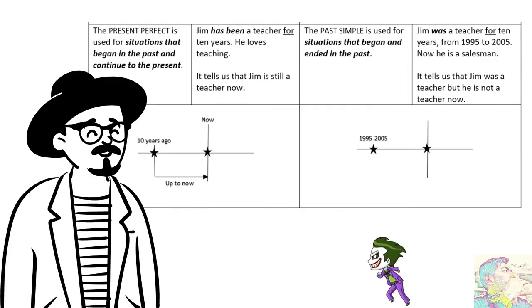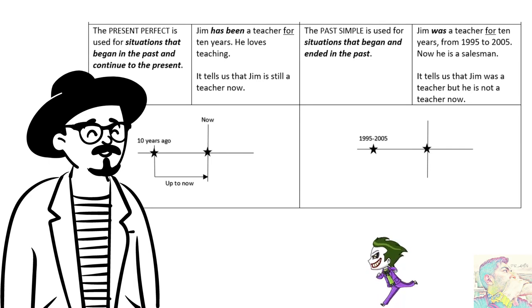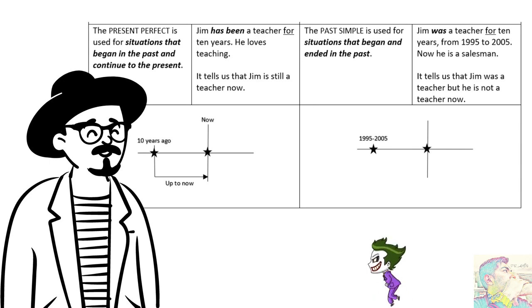Perbedaan kedua: present perfect masih ada hubungannya dengan saat ini. When we say 'Jim has been a teacher for 10 years', artinya Jim sudah menjadi seorang guru selama 10 tahun — dia mulai 10 tahun yang lalu dan sampai sekarang masih menjadi guru. Tapi kalau 'Jim was a teacher for 10 years from 1995 to 2005', artinya Jim adalah guru dari 1995 sampai 2005, tapi sekarang sudah tidak lagi. Gak ada connection ke zaman sekarang — itu past simple. Kalau present perfect, Jim has been a teacher for 10 years — sampai sekarang dia masih menjadi guru.